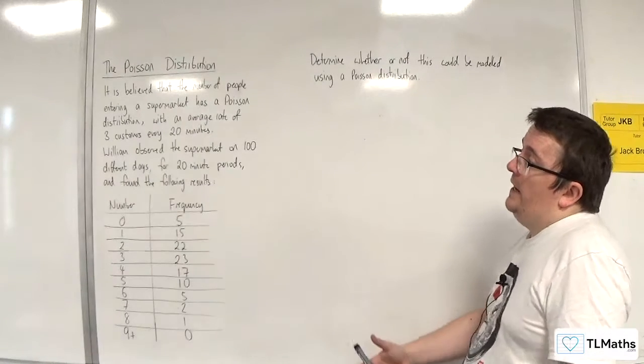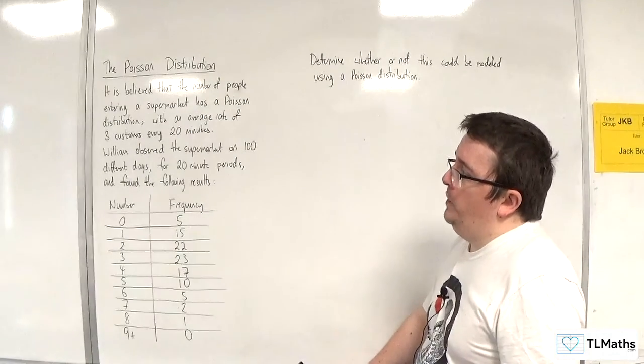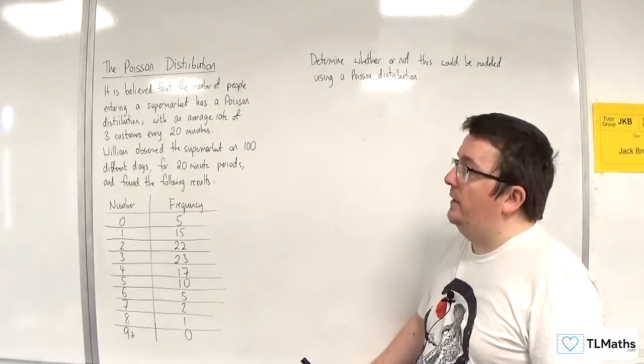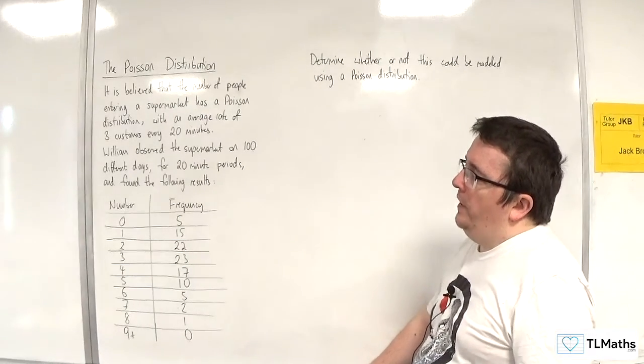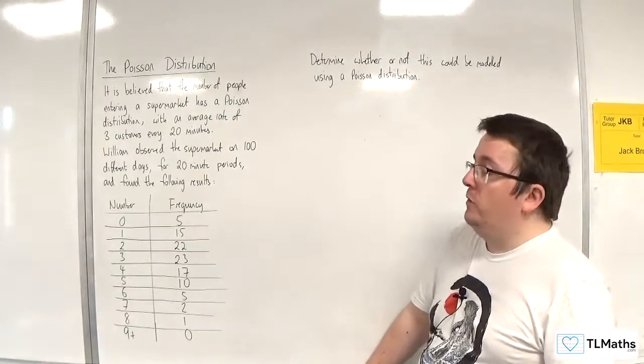So in this video, it is believed that the number of people entering a supermarket has a Poisson distribution, with an average rate of 3 customers every 20 minutes.